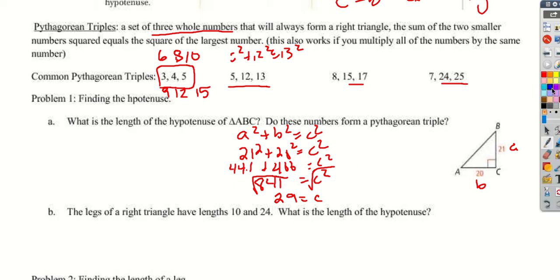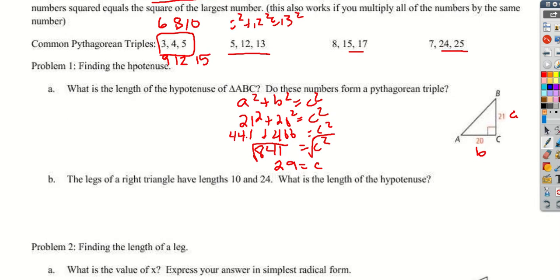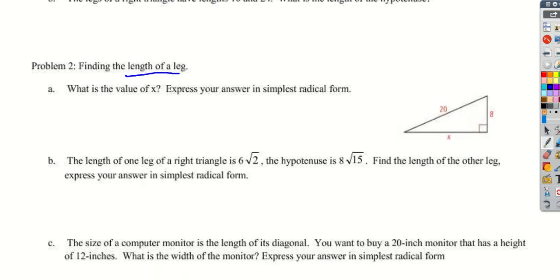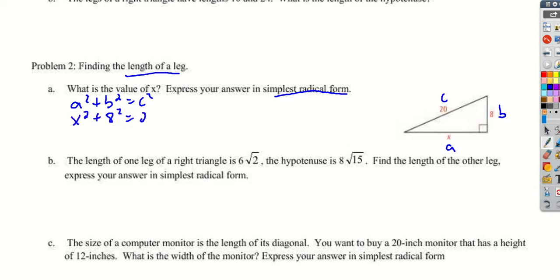The next one asks for simplest radical form, so we're finding a leg — and since it says radical form, we know it won't work out to a whole number. We identify the leg, leg, and hypotenuse. Using a squared plus b squared equals c squared, we get x squared plus 8 squared equals 20 squared.